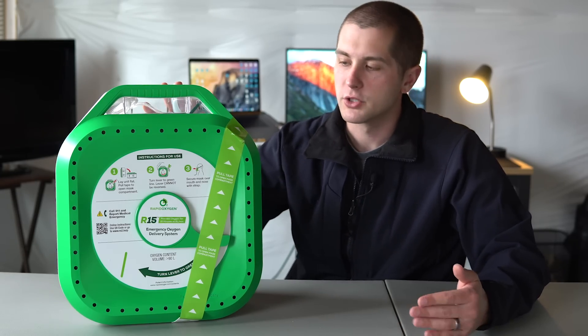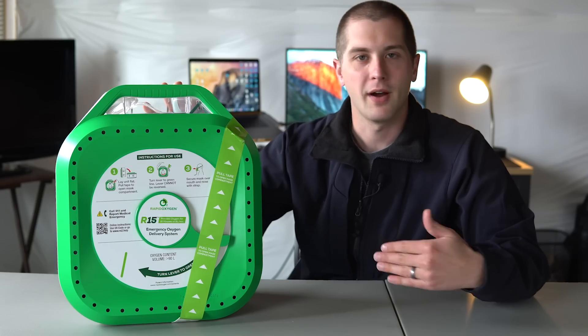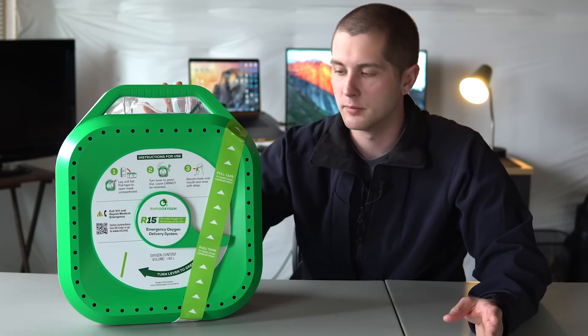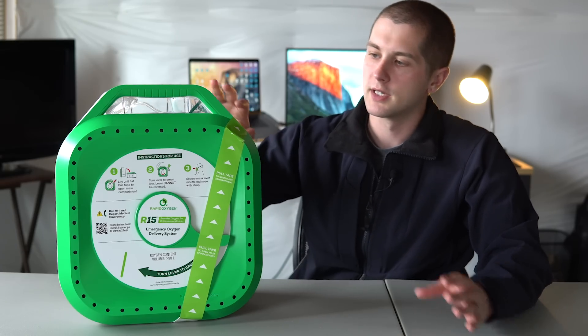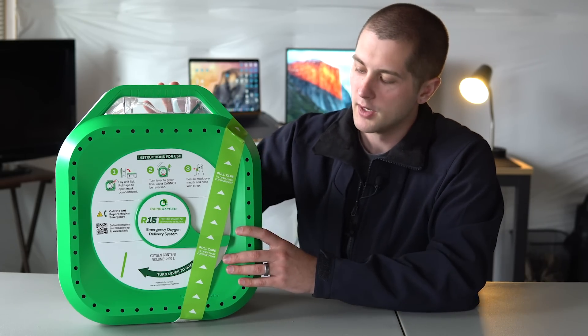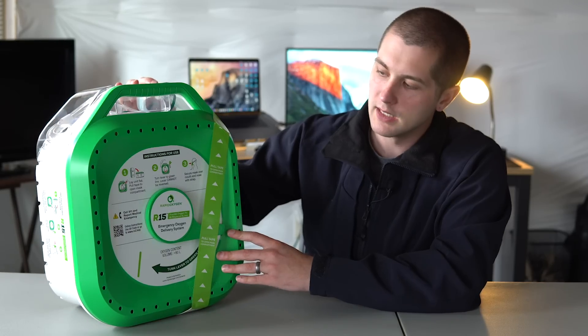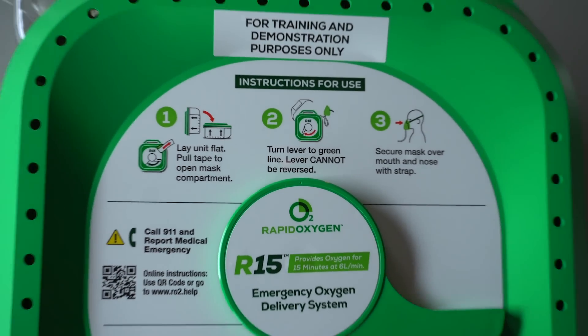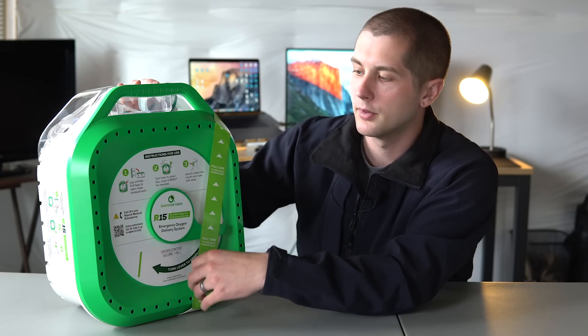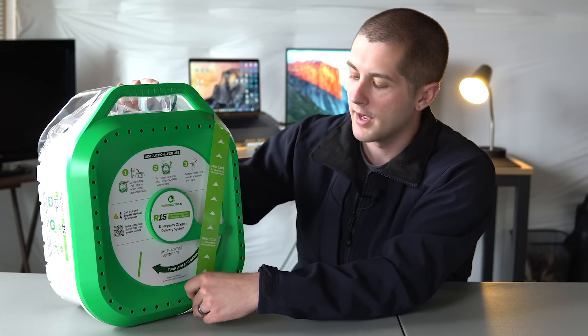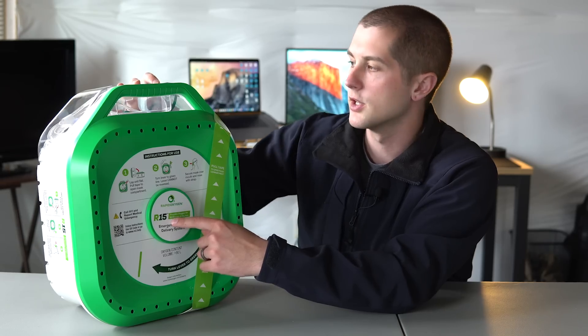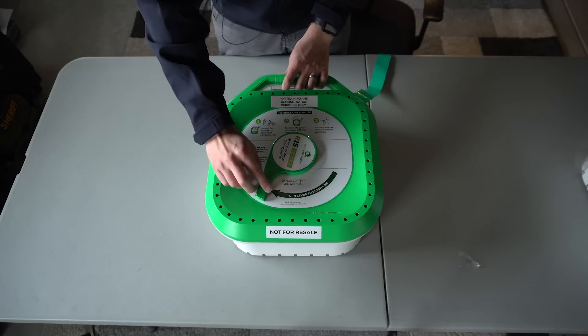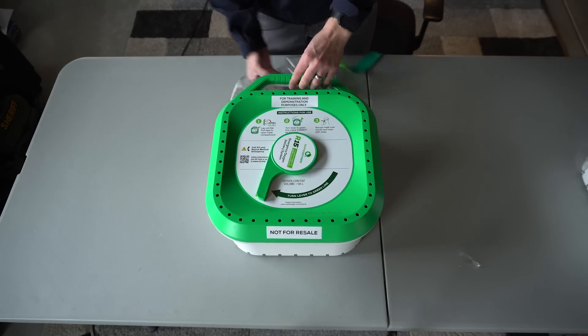So now I want to show you guys a quick demonstration on how this works and kind of how simple it is and intuitive. It doesn't really require any training, like I said before, but it is good to kind of have a familiarity with it. So very similar to an AED on the front here, you have instructions one, two, and three. So you have to take this unit, you have to lay it flat and you're going to pull the tape to open the mask compartment. And this tape is going to free up this lever as well as open up the plastic compartment at the top.